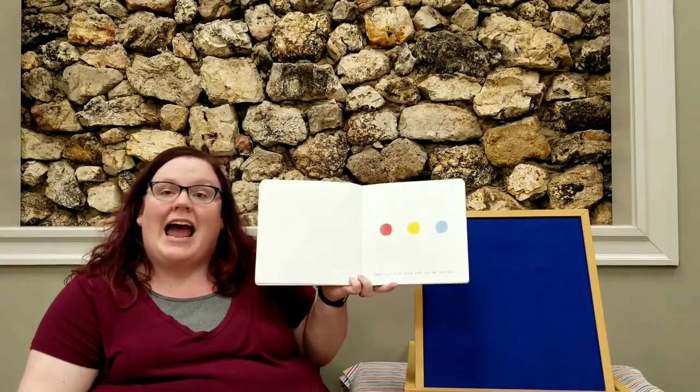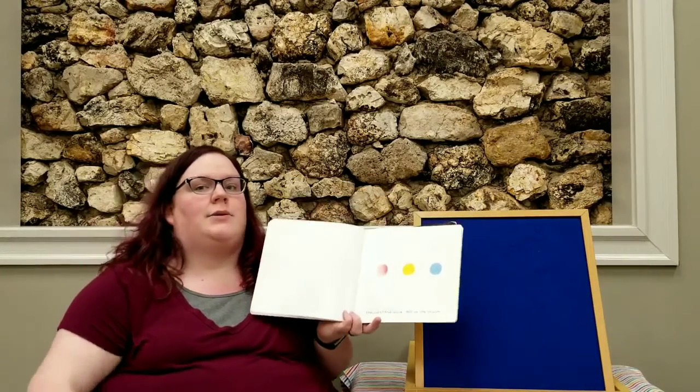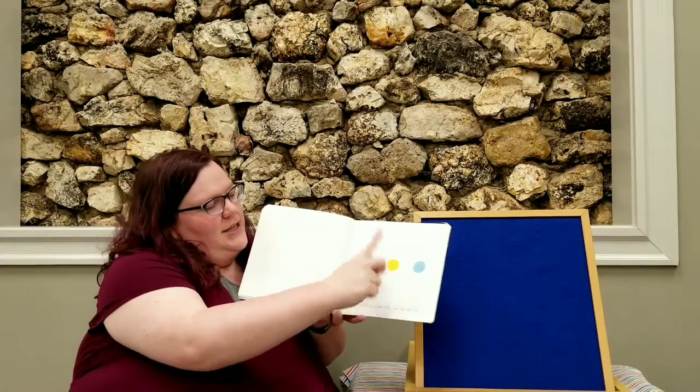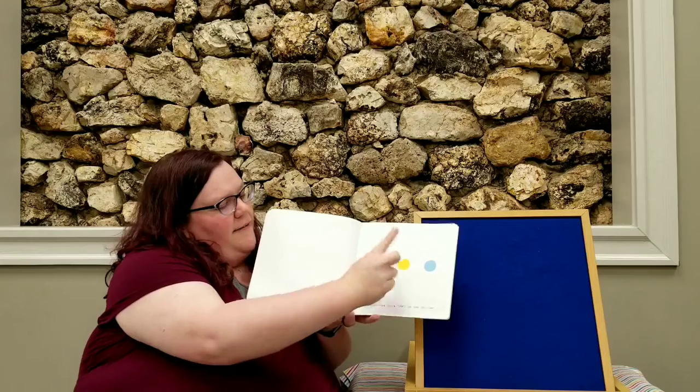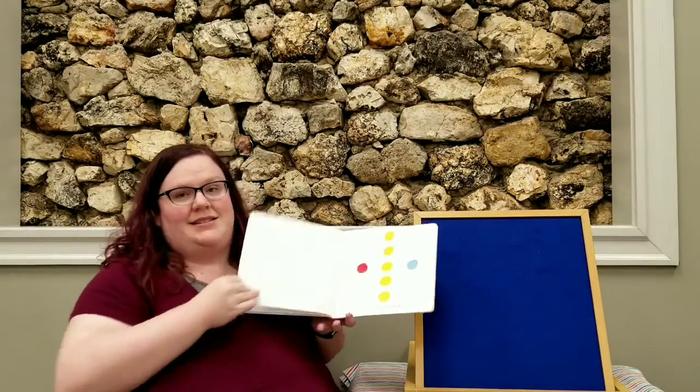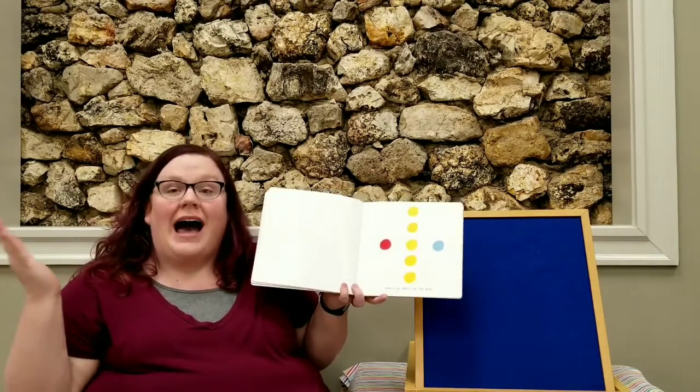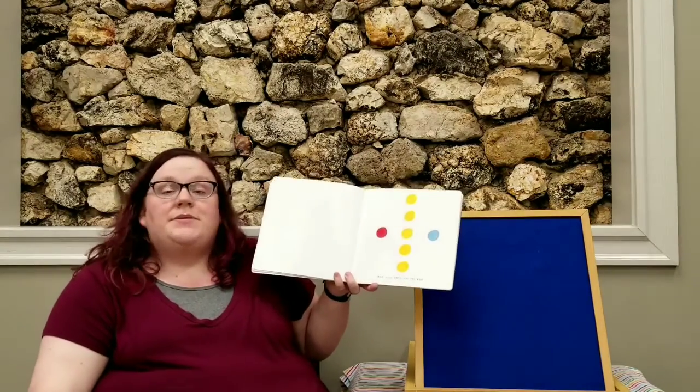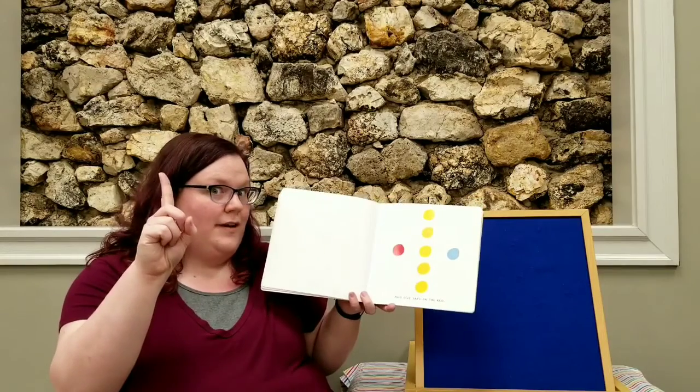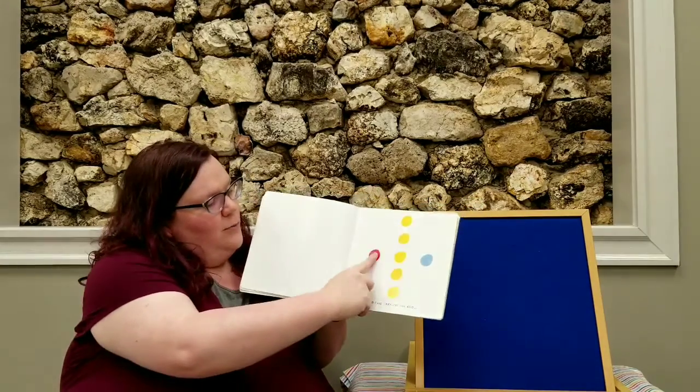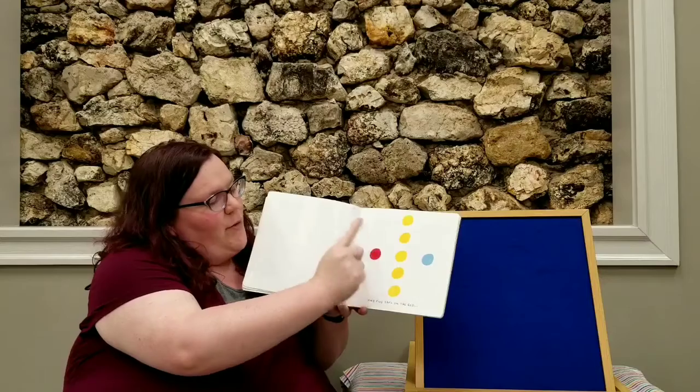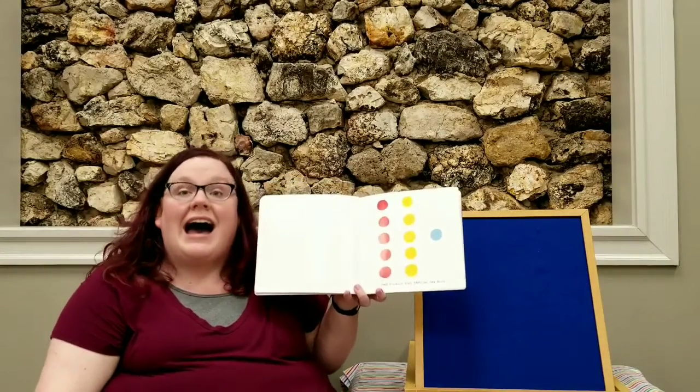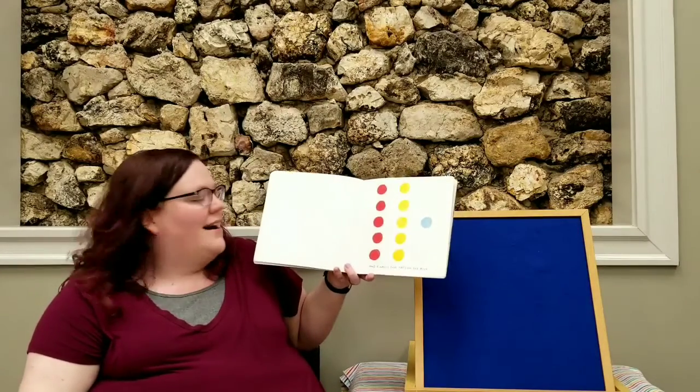So we're gonna do five quick taps on the yellow dot. So here we go. We got our fingers five times. Can you count with me? One, two, three, four, five. What happens? Now there are five yellow dots! Now we're gonna do five taps on the red dot. Got your finger ready? Here we go! One, two, three, four, five. What happens? Now there are five dots! Five red dots! Very good!